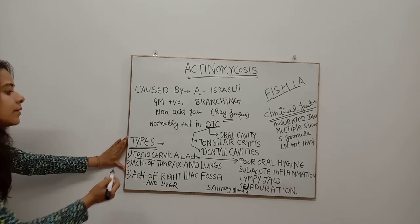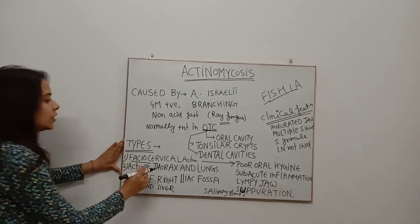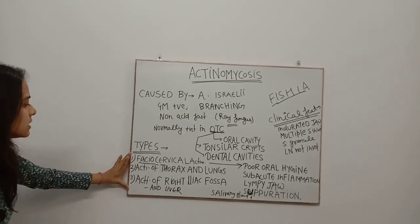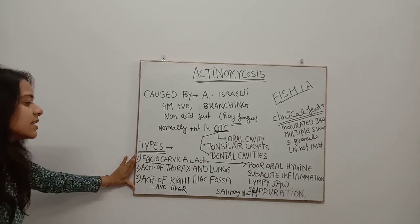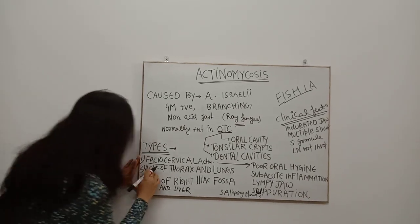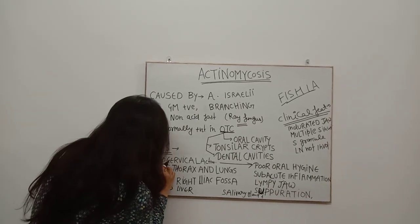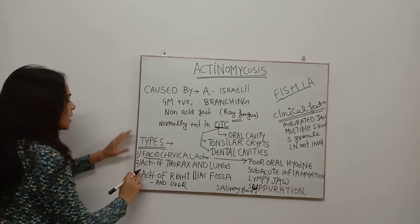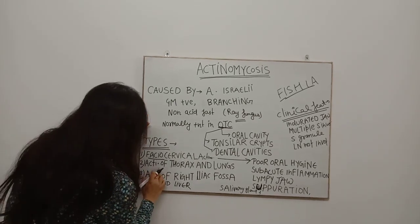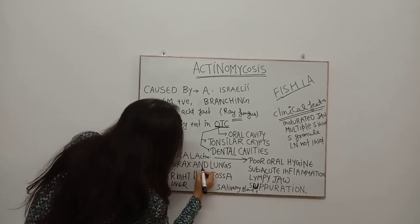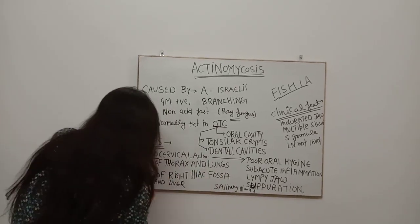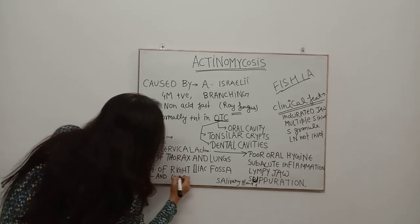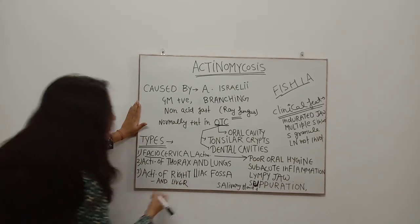Now we will discuss the types of Actinomycosis. There are 3 major types. Number 1 is Fascio-cervical Actinomycosis. Number 2 is Actinomycosis of the thorax and lungs. Number 3 is Actinomycosis of the ileocecal region and liver.